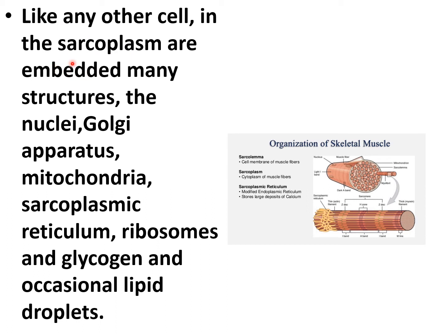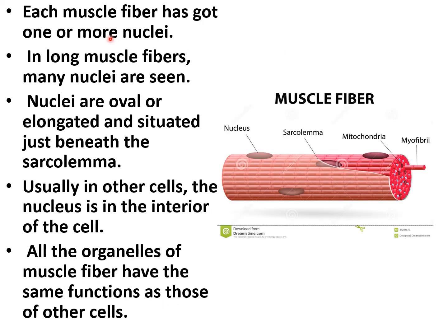Like any other cell, the sarcoplasm contains nuclei, Golgi apparatus, mitochondria, sarcoplasmic reticulum, ribosomes, and glycogen, and occasionally lipid droplets. Each muscle fiber has one or more nuclei, which are oval or elongated and situated just beneath the sarcolemma. All organelles of the muscle fiber have the same function as in other cells.